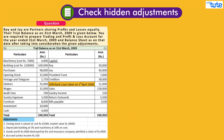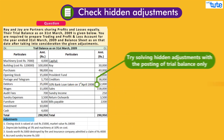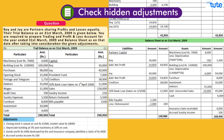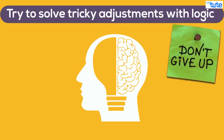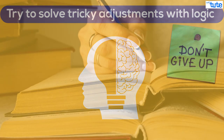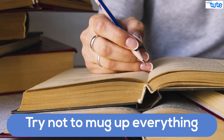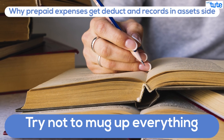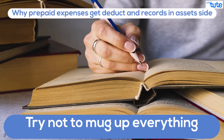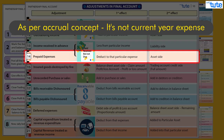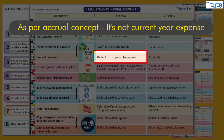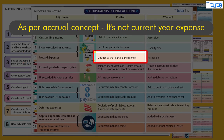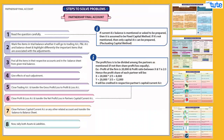Also, have a check on hidden adjustments. It would be preferable to solve hidden adjustments along with the posting of trial balance items, because if you forget to give the effect, your balance sheet may tally but at the wrong amount. If a tricky adjustment comes, try to solve it with logic — don't give up. One must avoid mugging up everything. For example, why is prepaid expense deducted and recorded on the asset side? Because as per the accrual concept, prepaid expense doesn't belong to the current year but was paid in the current year, so we deduct the prepaid amount from expenses, and that becomes our asset.